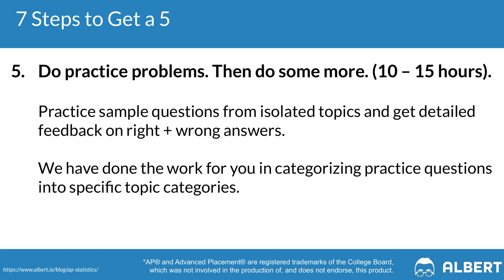Step number five is the most obvious one: you're going to have to do a lot of practice problems. For this step, we recommend that you allocate anywhere from 10 to 15 hours of studying. It's really important that as you work through sample questions, you're figuring out why you got a particular question wrong so that you can correct that mistake the next time you see that topic. Our AP statistics course on Albert has hundreds of practice questions as well as detailed explanations organized by unit and topic area so that you can isolate and pinpoint your biggest areas for improvement. We also have full length practice exams so that you can practice your pacing and feel comfortable with both the multiple choice as well as the free response sections of the AP statistics exam.